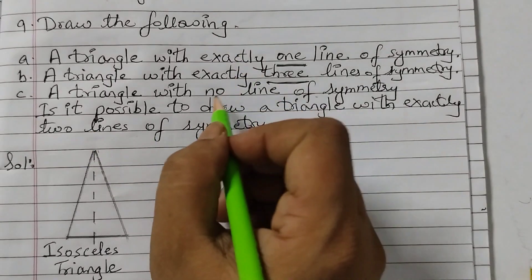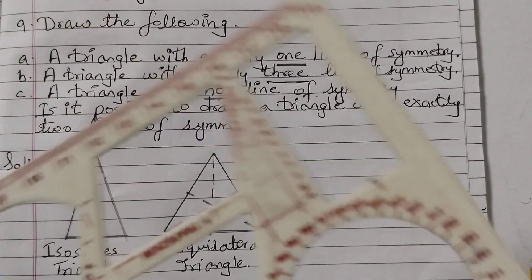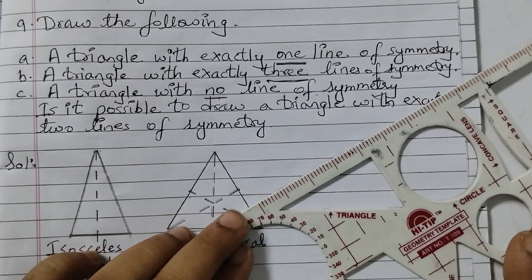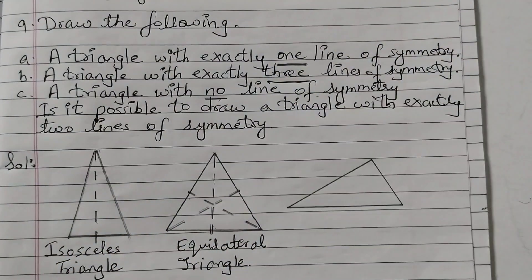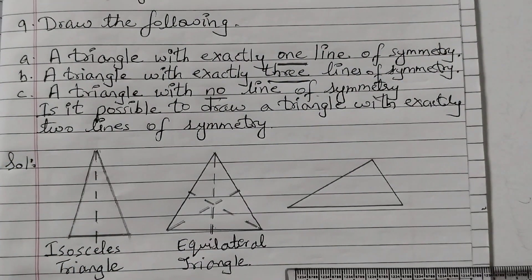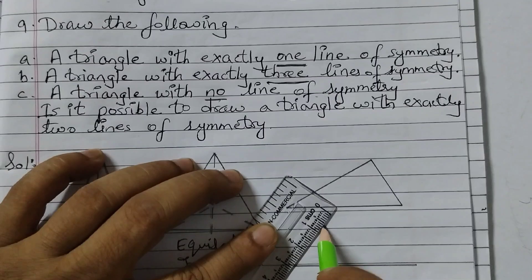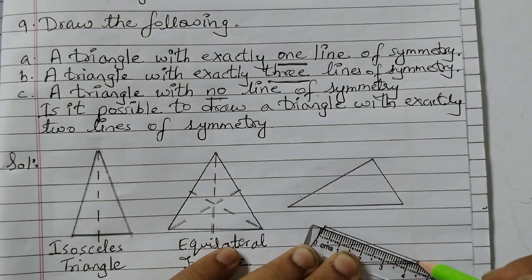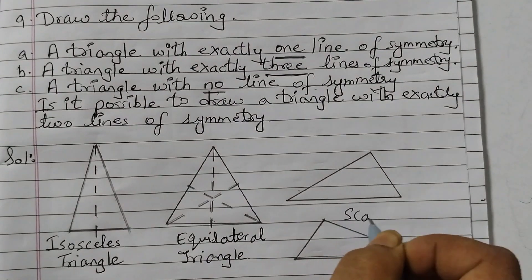The next one is a triangle with no line of symmetry — there should not be any line of symmetry. That's a scalene triangle; all three sides are of different length. We can use this right angle triangle to draw the scalene triangle. Drawing it with a ruler is also easy — just draw like this with any other measurements. Both of these are scalene triangles; all three sides should be of different length. I'll write here: scalene triangle.